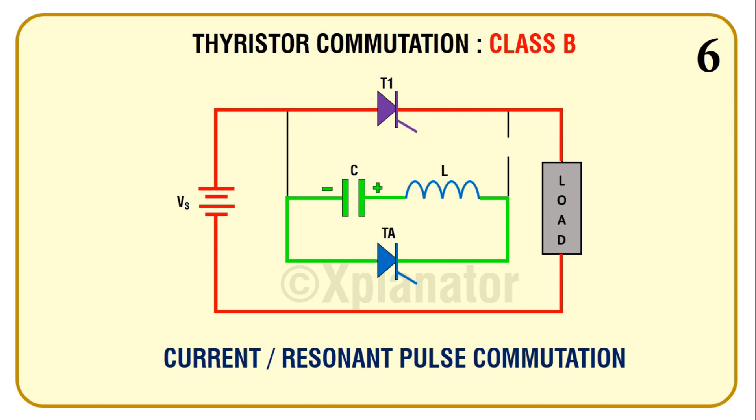The right-hand plate of the capacitor is now positive. This voltage reverse biases the auxiliary thyristor and therefore switches it off, and resonating current stops flowing in the circuit. The capacitor voltage forward biases the diode. Note that till now, the diode was reverse biased as the right-hand plate of the capacitor was negative.